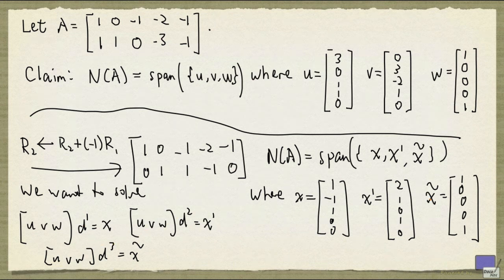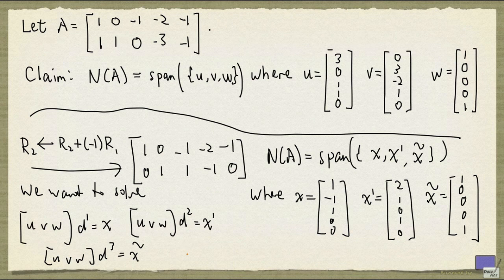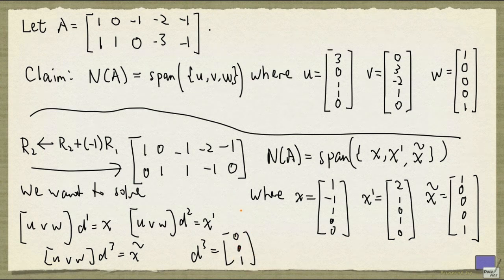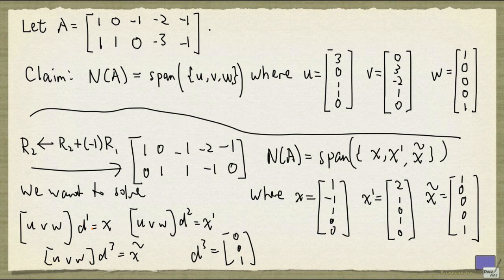Now, as I said, x tilde is already equal to w, so we can set d3 to be 0, 0, 1. So it remains to show that there exists solution for d1 and d2.